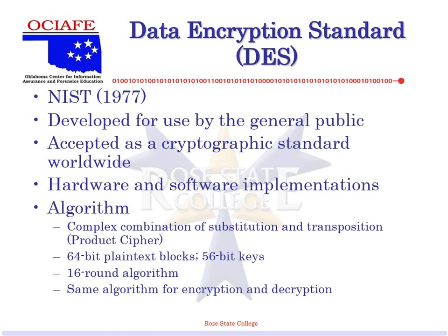Confidentiality, integrity, and availability — those are important, you need to know those, they go through all the courses. So let's talk about the algorithm for DES. It's a complex combination of substitution and transposition ciphers. 64-bit blocks with a 56-bit key. We go through 16 rounds, and we can use the same algorithm for encryption and decryption.